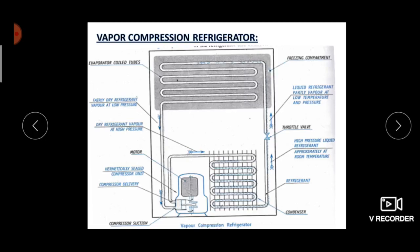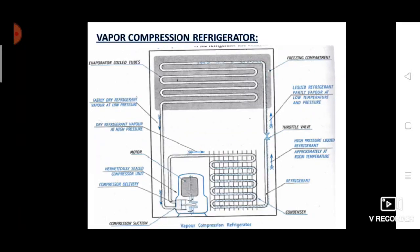The compressor has a suction side connected to the evaporator and a delivery side connected to the condenser. The compressor sucks the vapors of the refrigerant from the evaporator. These vapors are then compressed to a high pressure and high temperature inside the compressor, resulting in high pressure, high temperature refrigerant vapors at the compressor outlet.